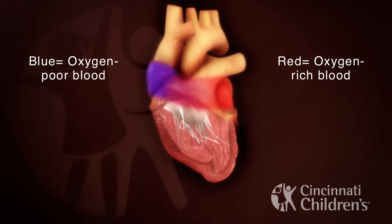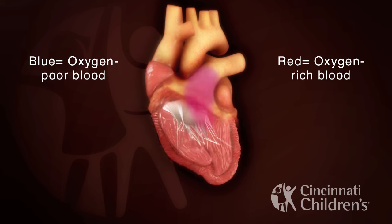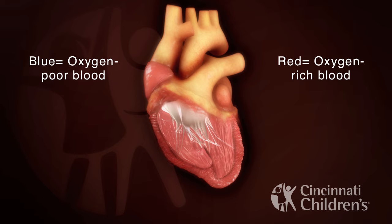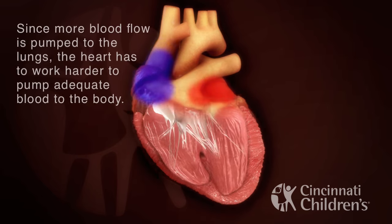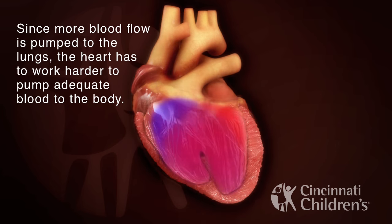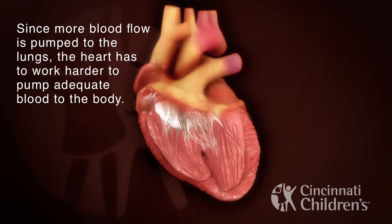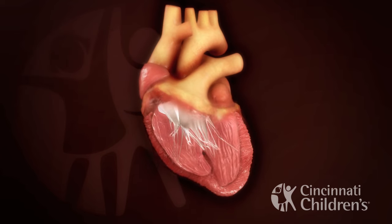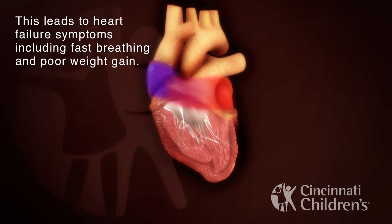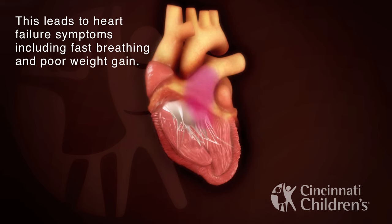Oxygen-poor blue blood and oxygen-rich red blood. Since more blood flow is pumped to the lungs, the heart has to work harder to pump adequate blood to the body. This leads to heart failure symptoms, including fast breathing and poor weight gain.